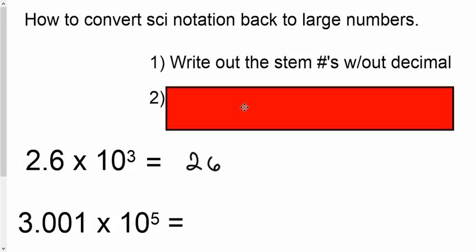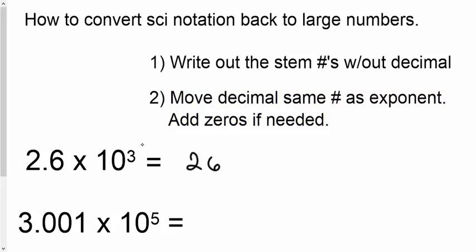Move the decimal the same number as the exponent. So, our exponent was three. We're going to have to move our decimal three times and add zeros if need be. Since this is a large number, we're going to be going to the right to make it a large number. We'd put a zero here and a zero there. The decimal was right here. So, moving it once past the six, moving it again, add a zero for a placeholder, and one more time, add a zero for a placeholder. And there's your number, 2600.